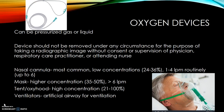Oxygen devices can be pressurized gas or liquid. The device should not be removed under any circumstance for the purpose of taking a radiographic image or examination without the consent or supervision of a physician, respiratory care practitioner, or attending nurse. The nasal cannula is the most common, providing low concentrations of oxygen, typically 24 to 36%, at 1 to 4 liters per minute. A mask allows for a higher concentration, typically 35 to 50% at greater than 6 liters per minute. Tents or oxy hoods provide high concentration of 21 to 100%, and ventilators are artificial airways used for ventilation.